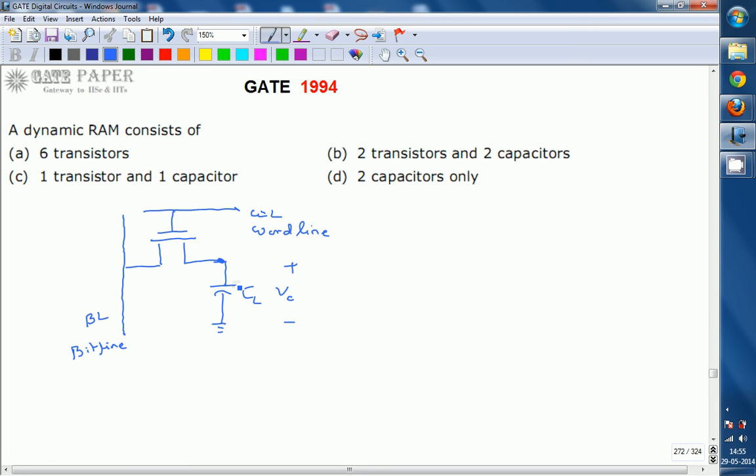Whenever the WL line is at logic 1, the transistor will be in the ON condition, so the bit line is connected to CL. Now the capacitor charges to the bit line voltage.